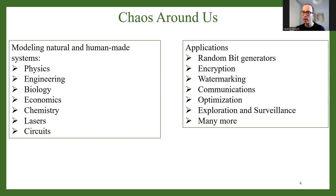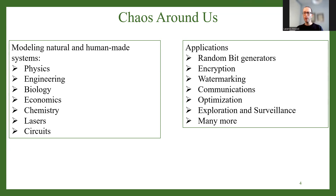Especially in the last 20 years or so, chaos has been considered in many applications, like in random bit generators, in encryption, in watermarking, in communications, optimization, in surveillance. There are many applications of chaos being reported in the literature. Overall, we can say chaos is everywhere.